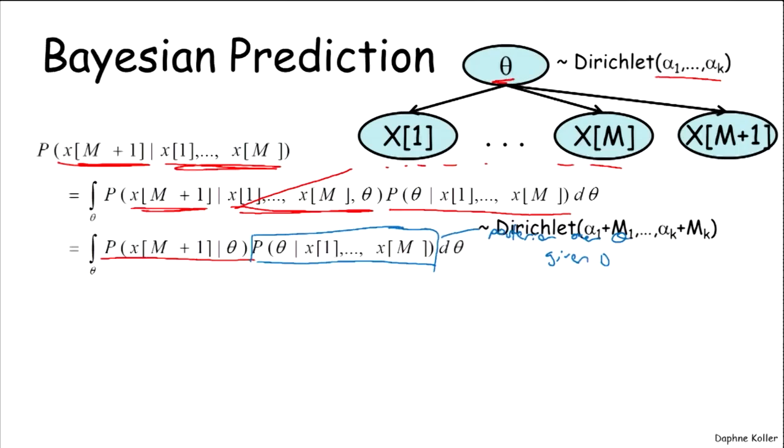That, as we showed just on the previous slide, is simply a Dirichlet whose hyperparameters are alpha 1 plus m1 up to alpha k plus mk.